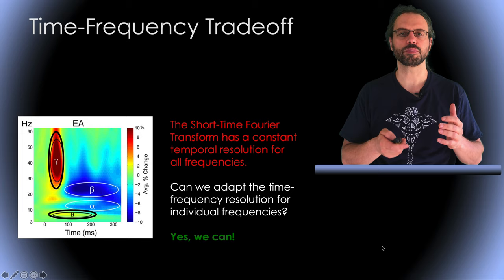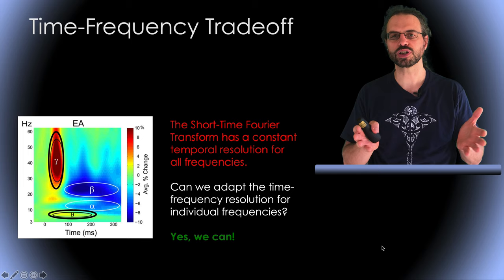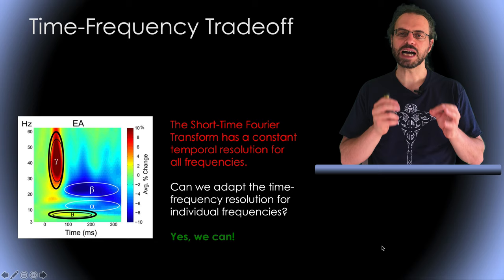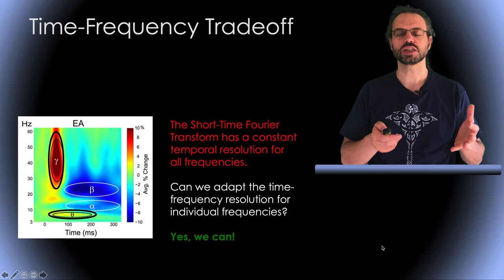The problem is that the Fourier transform has a constant time resolution at all frequencies that depends on the size of the signal or time window. Can we adapt time frequency resolution for individual frequencies to improve spectral estimation? Yes, we can.